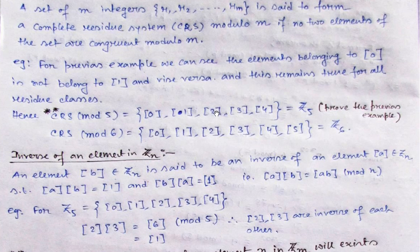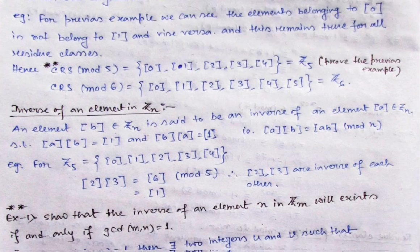So Z_5 is nothing but {0-bar, 1-bar, 2-bar, 3-bar, 4-bar}, or you can say {box(0), box(1), box(2), box(3), box(4)}. This problem has already appeared so many times in exams, so try to understand this clearly.